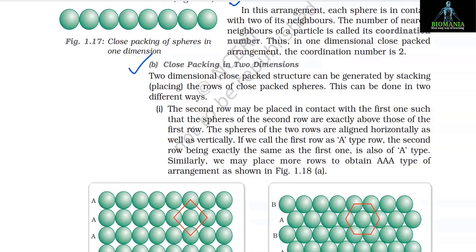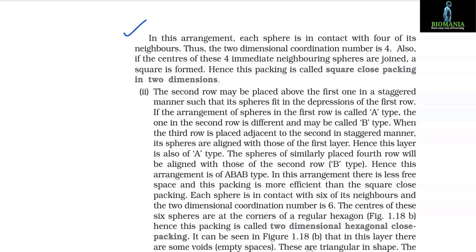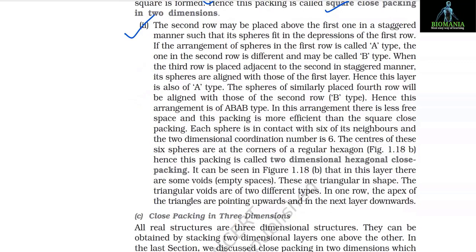(b) Close packing in two dimensions — two-dimensional close-packed structures can be generated by stacking rows of close-packed spheres in two ways: (1) Square close packing — the second row is placed such that spheres are exactly above those of the first row, giving an AAA type arrangement. Each sphere is in contact with four neighbors, so the two-dimensional coordination number is 4. If centers of four neighboring spheres are joined, a square is formed — hence called square close packing.